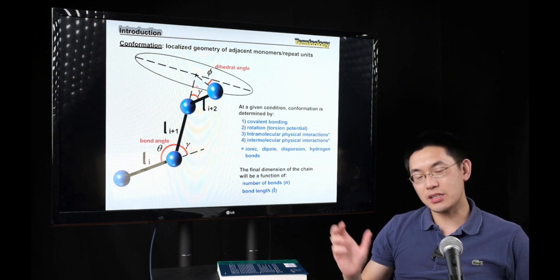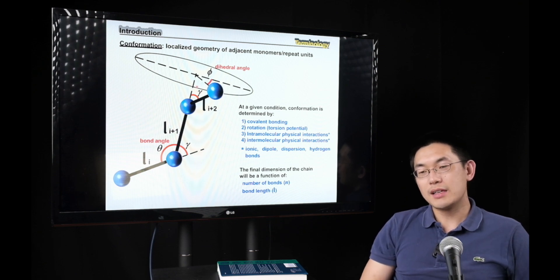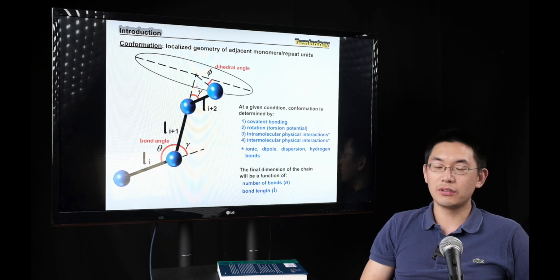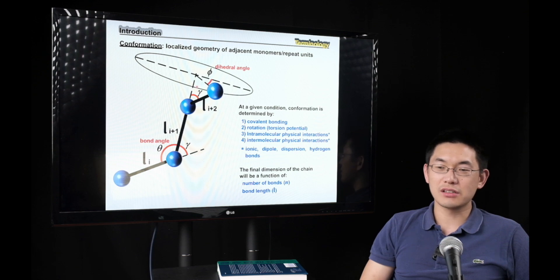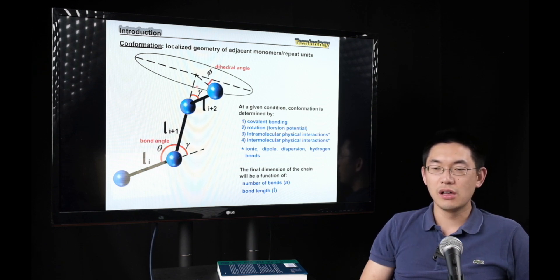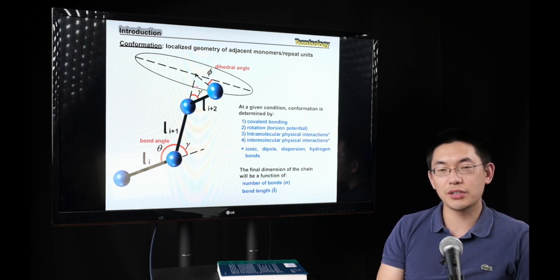To keep things simple, we start with the most idealized case: no restriction on bond angle, no restriction on dihedral angle. This is called the free-jointed chain — a chain that can adopt any angle freely, like a joint that can move in any direction. The free-jointed chain is fundamental to all discussions over the next month. Today's class was a basic introduction to polymer coil behavior and bond angle restrictions, and next lecture we'll dive into the free-jointed chain in detail.